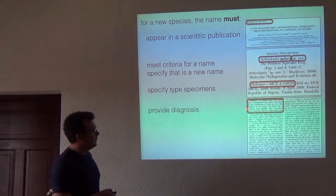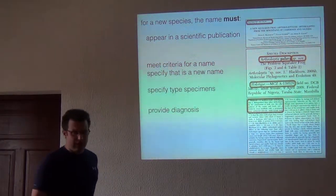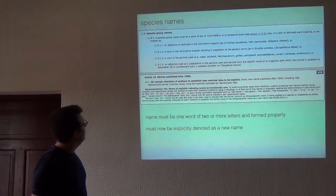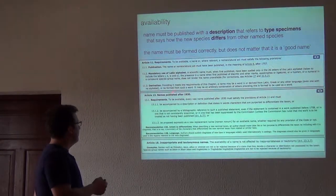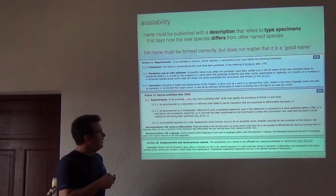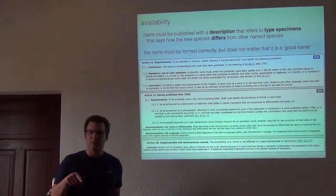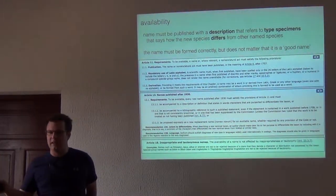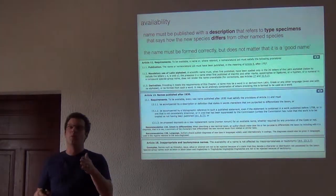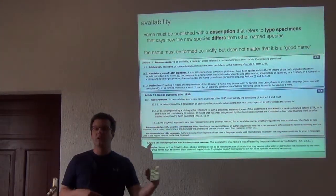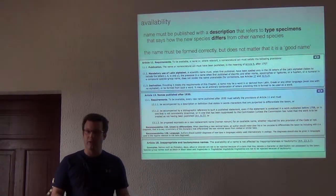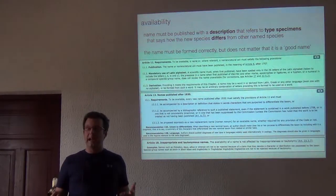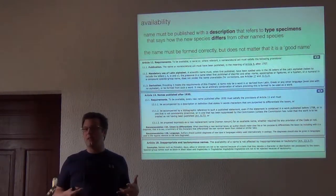This diagnosis is really fundamentally important. I want to point to you that this is just from yesterday — this piece of the code, this article here. After 1930, remember we talked about before 1930, then after 1930, and then after 1999 — going through time the code becomes more and more rigorous. So there are definitely a lot of older names that don't have a diagnosis. They appear in the literature, they're used, and the authors really don't provide any substantive information about how you might tell that species apart from any other species.